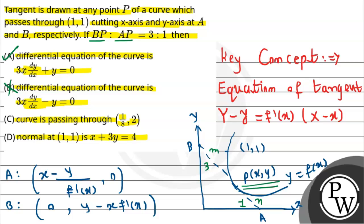This differential equation is 3x dy/dx plus y equals 0, so option A is correct. Now we'll check the other options. The curve passes through the point, so we have the differential equation dy/dx equals -y/(3x). We'll separate variables and integrate both sides.